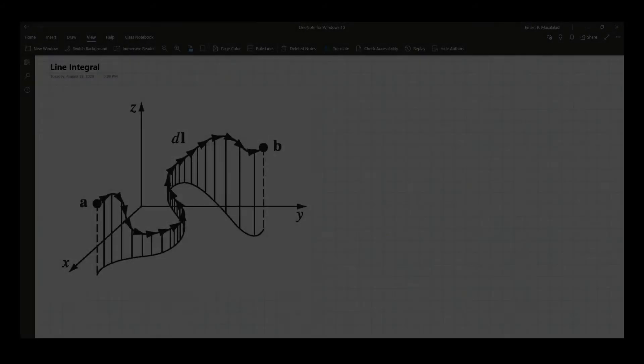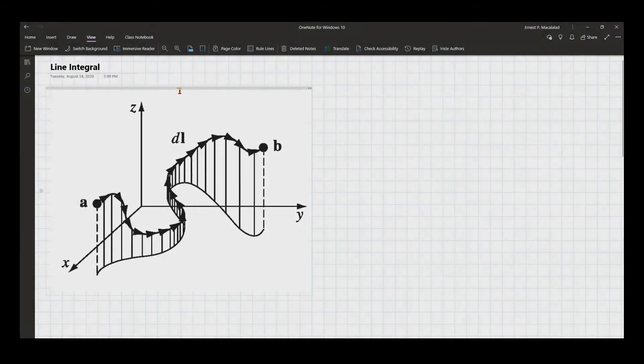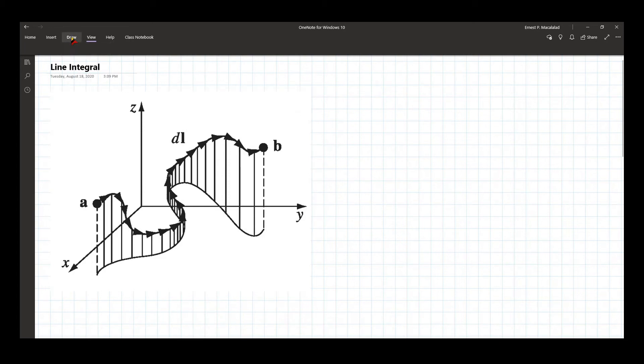This figure explains how we do line integrals. Here we have two points a and b, and we define a path going like this.